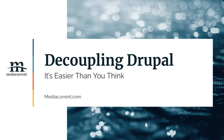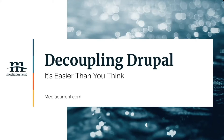The main thing we want you to know is that if you're thinking about decoupled, one of the biggest pieces you need is already there — it's already part of your Drupal 8 application. That, of course, is the JSON API module. The JSON API module is part of Drupal Core and is a key ingredient to transforming your application into a decoupled solution.